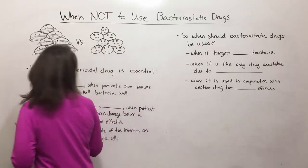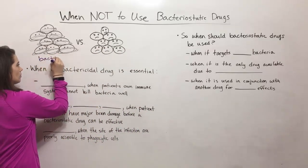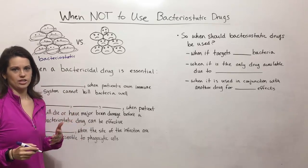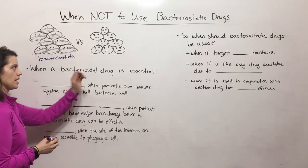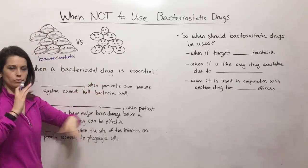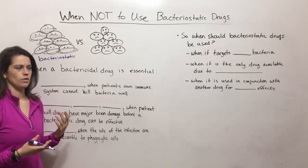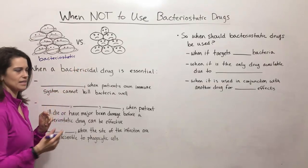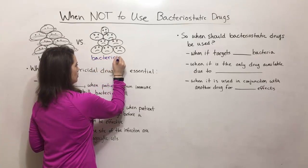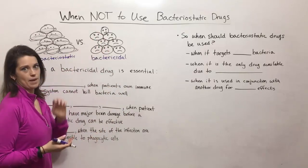There are drugs that are bacteriostatic, meaning that they prevent the multiplication and growth of the bacteria in the patient — represented here by bacteria that have been lassoed, with rope tied around them to keep them from going anywhere, mainly keep them from replicating. The other major class of antibiotic is called bactericidal, where the bacteria are actually killed by the drug.